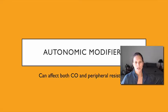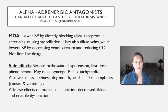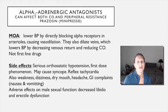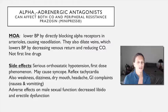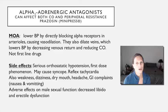The autonomic modifiers affect both cardiac output and peripheral resistance. The alpha-1 adrenergic antagonists — alpha-1 blockers — lower blood pressure by directly blocking alpha receptors in the arterioles. Since norepinephrine or epinephrine hitting alpha receptors causes vasoconstriction, blocking them produces vasodilation. They also vasodilate in the venous system, lowering blood pressure by decreasing venous return and reducing cardiac output.